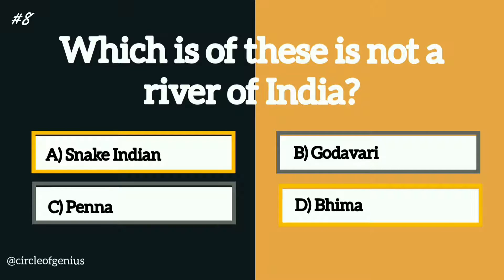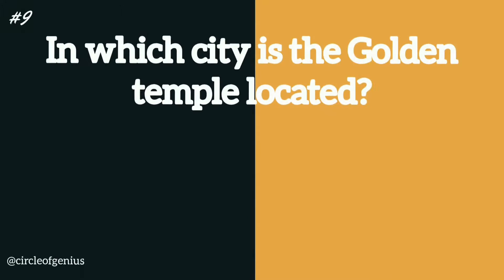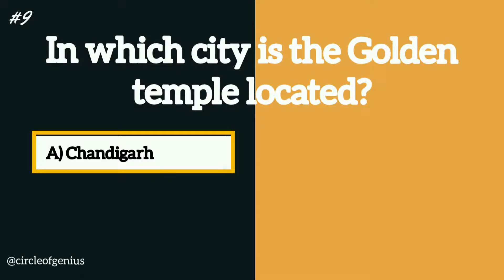The correct answer is option A, Snake Indian. Question number nine: in which city is the Golden Temple located? Option A: Chandigarh, B: Jalandhar, C: Amritsar, D: Noida.